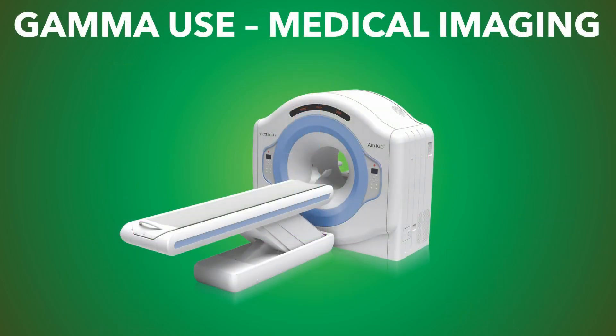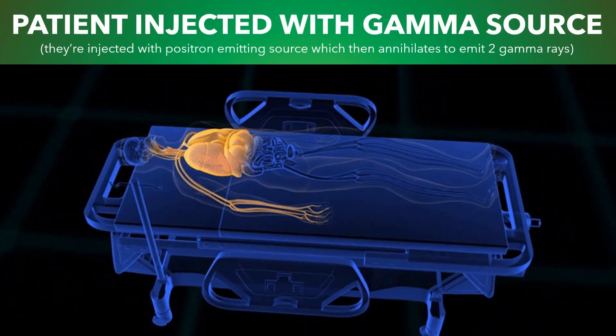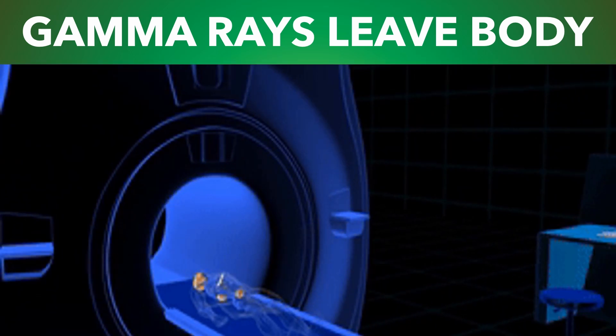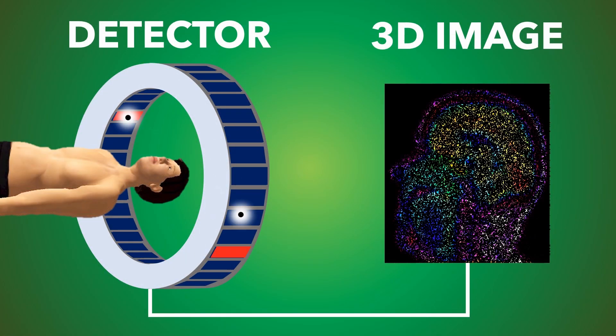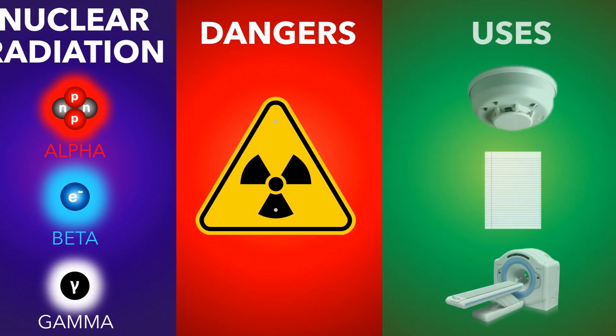Gamma use: medical imaging. A gamma-emitting source is injected into the patient, which then spreads into the body. Gamma rays then leave the body where they are detected, and a 3D image can be formed of the inside of the patient. So that's Nuclear Radiation Explained.